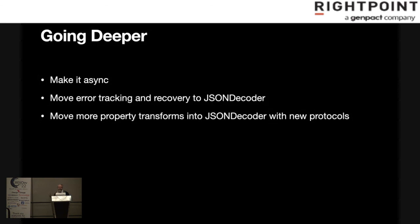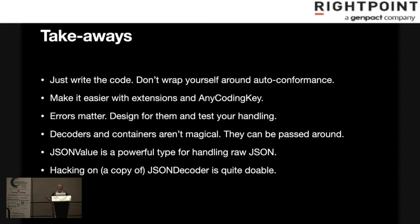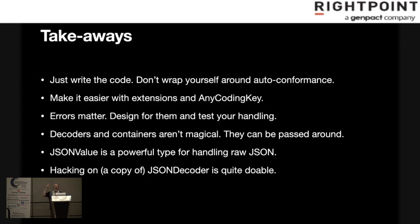These are the kinds of things you can play with. This talk isn't about any specific technique — it's about getting you to write some code. Think about your errors, especially your errors. Build extensions that work for your problems. AnyCodingKey and JSONValue are really nice things to hack in. And don't be afraid, if you have a wacky problem, to hack on JSONDecoder itself — especially the non-Apple open-source version. It's thousands of lines because the Codable conformances require about 1,000 lines of boilerplate, but it's really basic stuff. It's just code. Have a great conference.